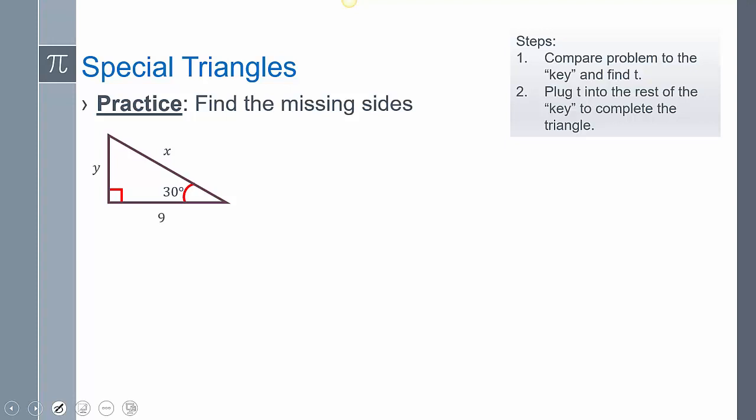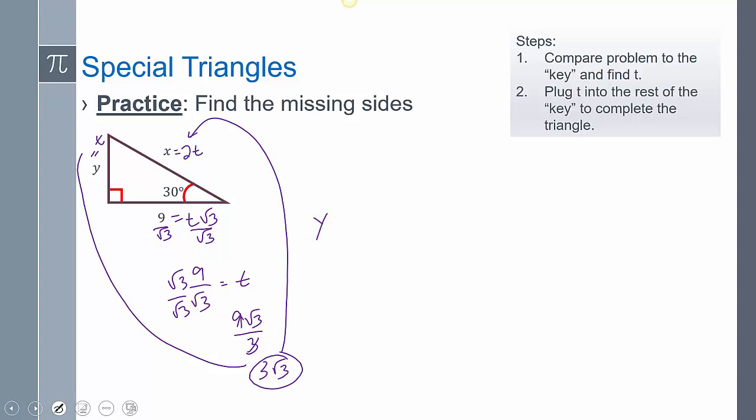Why don't you guys give this one a shot? So comparing it, this is going to be T root 3. This is going to be 2T. And this is going to equal T. So this is another one of those weird algebra ones. So dividing both sides by root 3. I have to rationalize that. So 9 over root 3 equals T root 3 over root 3. So 9 root 3 over 3. Those reduce to 3 root 3. So now plugging that back in for Y. Plugging that back in for X. And so you're going to get Y equals 3 root 3. And you're going to get X equals 6 root 3. Multiply it by 2.